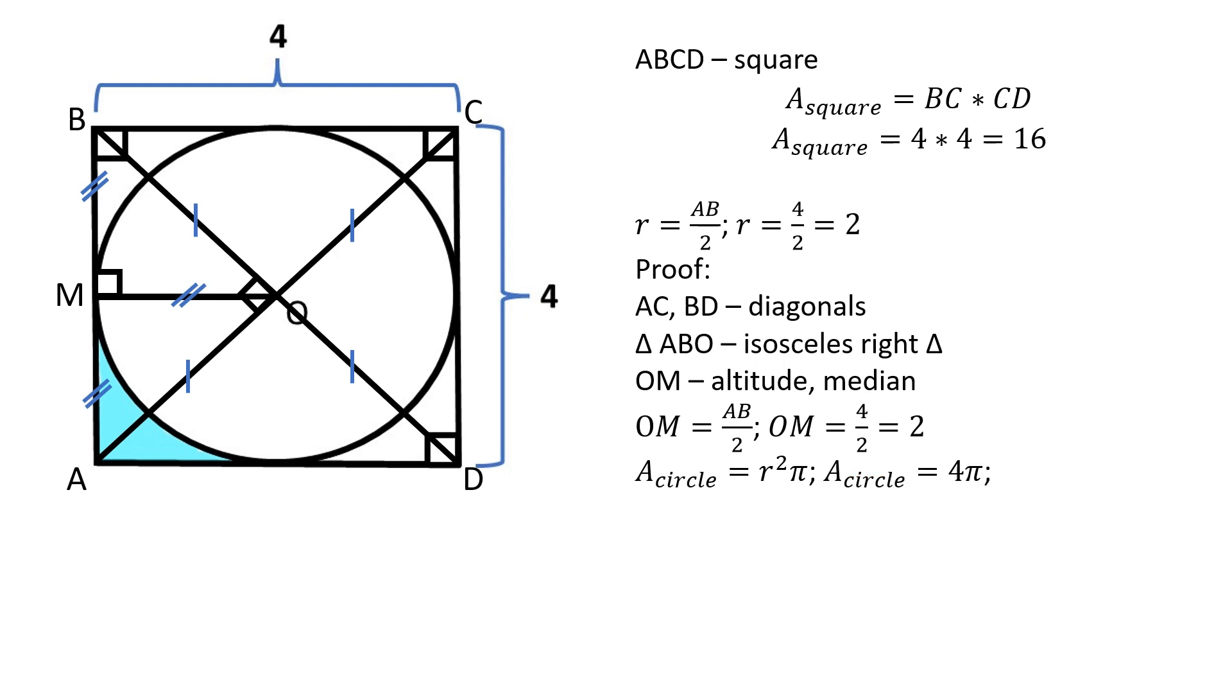The difference between the area of the square and the area of the circle is equal to the area of these four congruent shapes. Therefore, the area of the blue region can be calculated using this formula. And after simplifying the equation, we get that the area of the blue region is equal to 4 minus pi, which is approximately 0.86 square units.